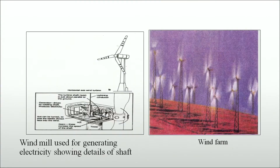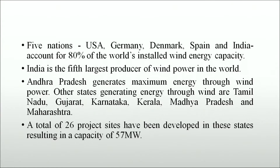Wind turbines transform wind energy into mechanical power which can be used to generate electricity. Five nations — USA, Germany, Denmark, Spain and India — account for 80% of the world's installed wind energy capacity. India is the fifth largest producer of wind power in the world. Andhra Pradesh generates maximum energy through wind power. Other states generating wind energy are Tamil Nadu, Gujarat, Karnataka, Kerala, Madhya Pradesh and Maharashtra, with a total of 26 project sites developed, resulting in a capacity of 57 megawatts.